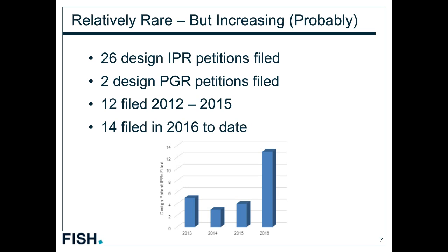PGR proceedings for design patents can raise grounds including lack of ornamentality and inventorship issues, which have been raised in the two PGRs filed so far. A significant tradeoff, however, is the severe estoppel that can attach, and also a higher threshold for institution applies to PGRs as compared to IPR proceedings. These issues are addressed in more depth in previous installments available at fishpostgrant.com.